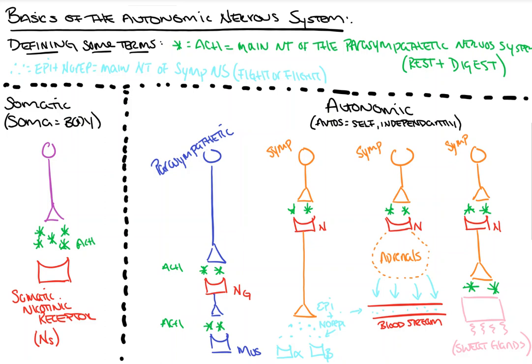The first thing we want to do is define some of our terms. You can see up here the little green star — that's our acetylcholine molecule, and acetylcholine is the main neurotransmitter of the parasympathetic nervous system. The parasympathetic nervous system, as hopefully we know, is colloquially called the rest and digest system. These little blue dots over here represent epinephrine and norepinephrine, and these are the main neurotransmitters of the sympathetic nervous system, colloquially named our fight-or-flight response.